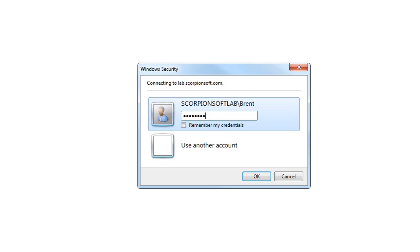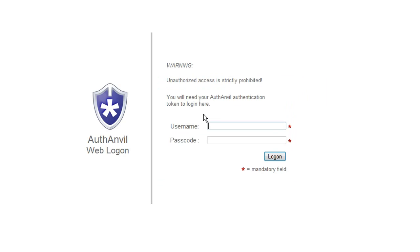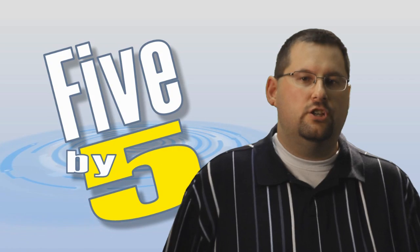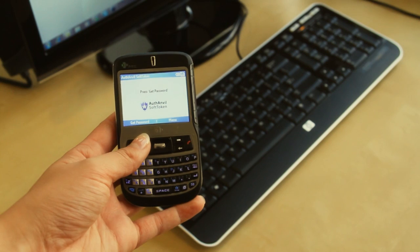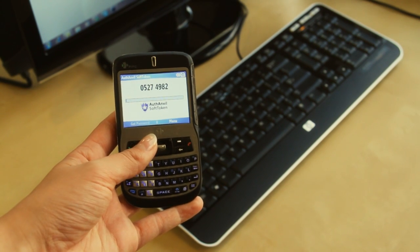I don't know about you, but I think that this type of information shouldn't be protected with a simple password that can be shared, stolen, or easily guessed. So take advantage of the Authenvil web login agent to add a protection scope to the SharePoint sites. This way, before a user can be authorized to gain access to such information, they will be challenged to provide their Authenvil passcode to verify who they are.